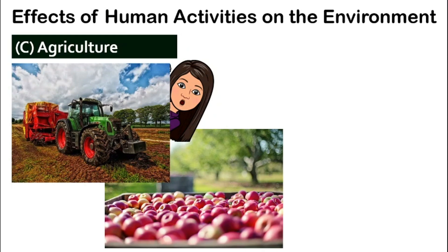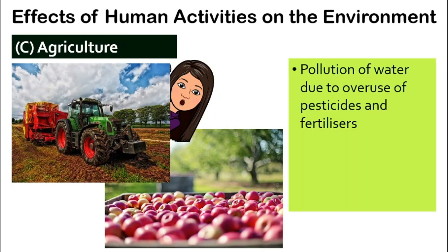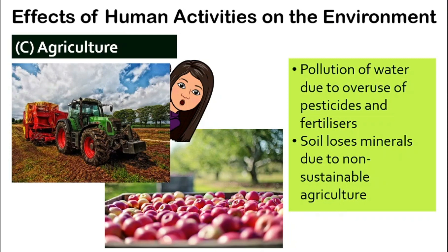The third activity is agriculture. Agriculture is actually good because we plant things, but how does it damage our environment? Sometimes in agriculture there might be an overuse of pesticides and fertilizers. If we use too much, they are chemicals and they bring water pollution. Also, if we practice non-sustainable agriculture, the soil can lose minerals.